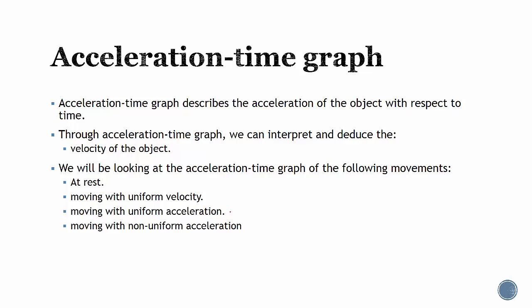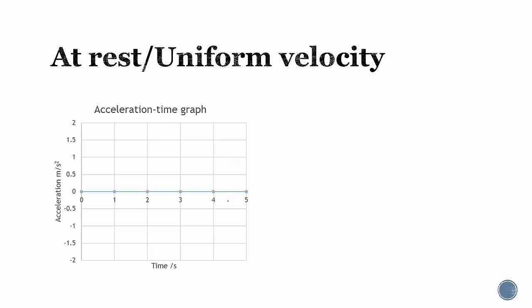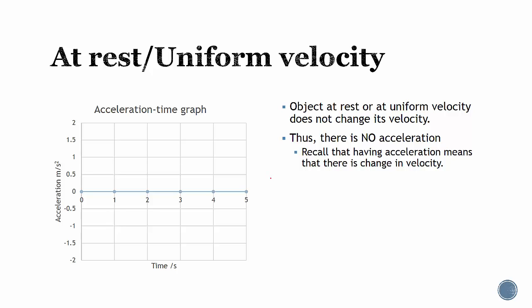For objects at rest or at uniform velocity, the acceleration-time graph is simply a flat line at zero. Objects at rest or at uniform velocity do not change their velocity. If you recall, acceleration is the rate of change of velocity — since there isn't any change, there is no acceleration. So acceleration will remain at zero at all times for objects at rest or moving with uniform velocity.